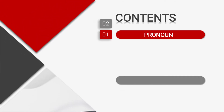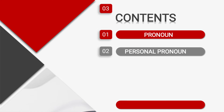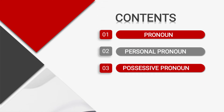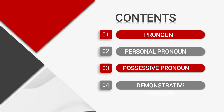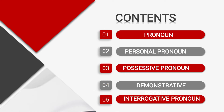Number 1: What is pronoun? Number 2: Personal pronoun. Number 3: Possessive pronoun. Number 4: Demonstrative pronoun. And number 5: Interrogative pronoun. In this presentation we will learn about pronouns and its various types with examples.